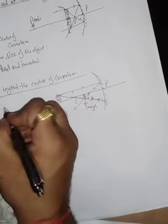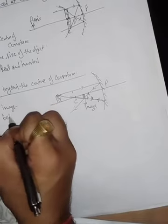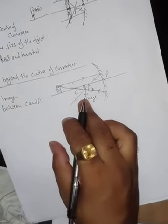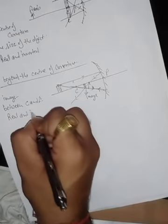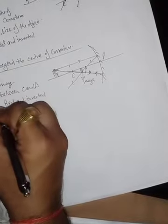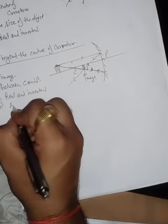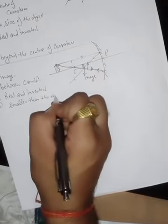Image is formed between center of curvature and focus. It is real and inverted. Third point: the image size is smaller than the object.